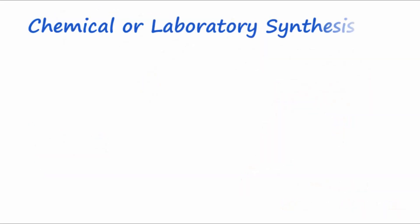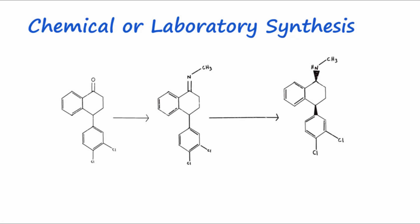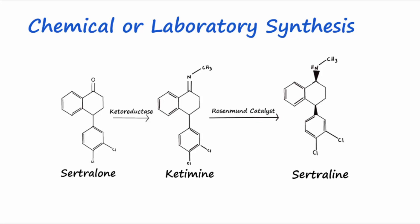An example of a chemically synthesized drug is the antidepressant sertraline, produced by chemoenzymatic synthesis. The major steps include using a ketoreductase to convert sutralone to the intermediate ketamine. Ketamine is then converted to sertraline by the Rosenmann catalyst, which is palladium with barium sulfate, with methanol, hydrochloric acid, and hydrogen gas added as cofactors.